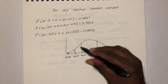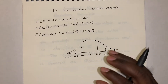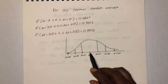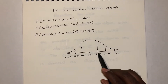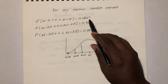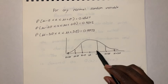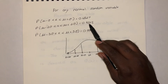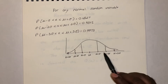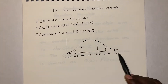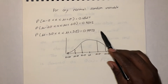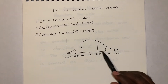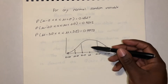Looking at this graph of a typical normal distribution — μ is always in the center. The region from μ − σ to μ + σ contains 0.6827 of the area under the curve. From μ − 2σ to μ + 2σ contains 0.9545, and from μ − 3σ to μ + 3σ contains 0.9973. The total area under the curve from negative infinity to positive infinity equals 1, so this makes sense.